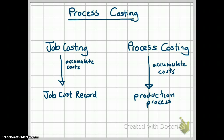If they have multiple steps in their production process, they separate all of these processes into departments and say, for this particular department, let's see what all the costs that went in. Then they divide those costs by the output and come up with a cost for that particular department. We'll take a look at how that works in a minute.